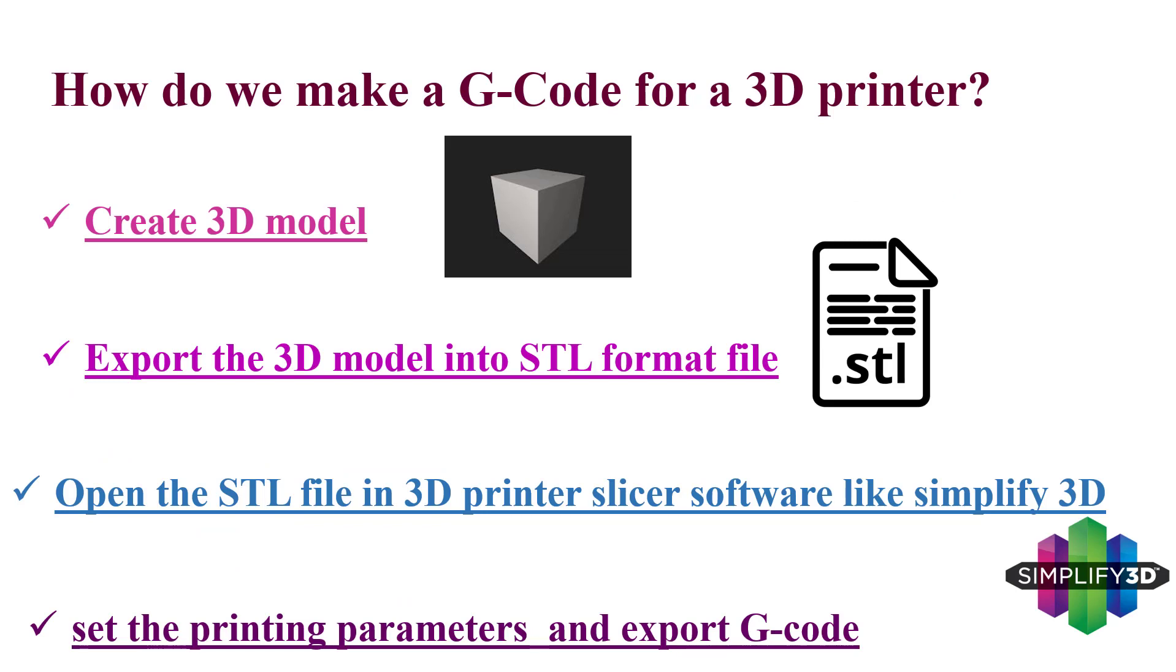How do we make a G-code for a 3D printer? There are some steps. First, we should create a 3D model. It can be done by graphical software like SolidWorks, AutoCAD, or Rhino. It depends on your interest, but if your software can create a 3D model, it is enough.